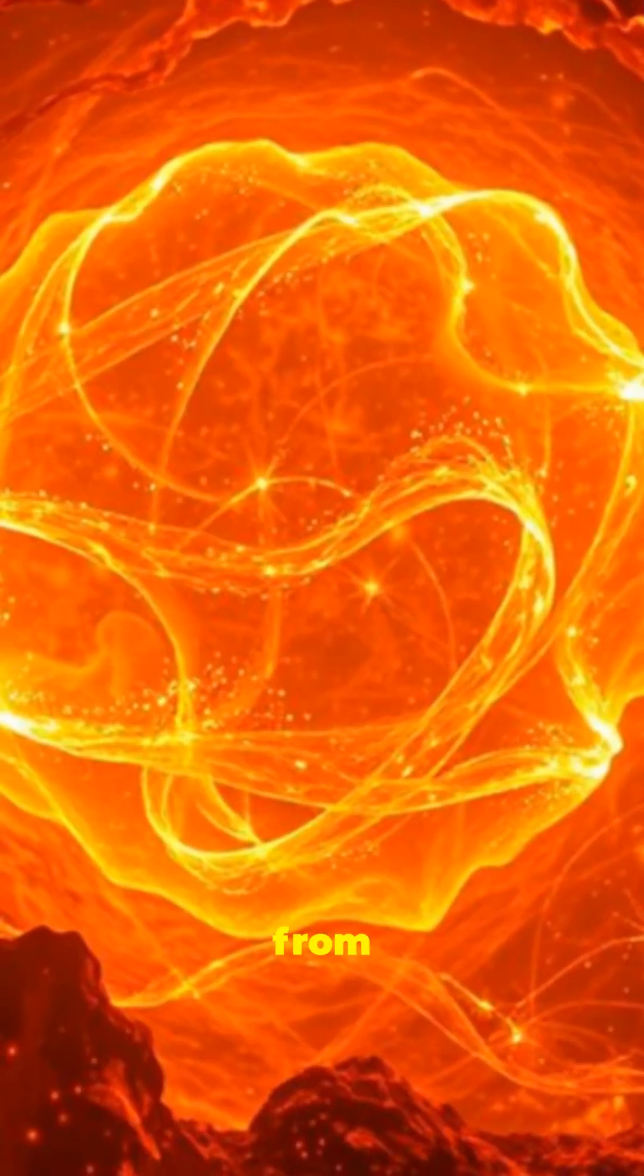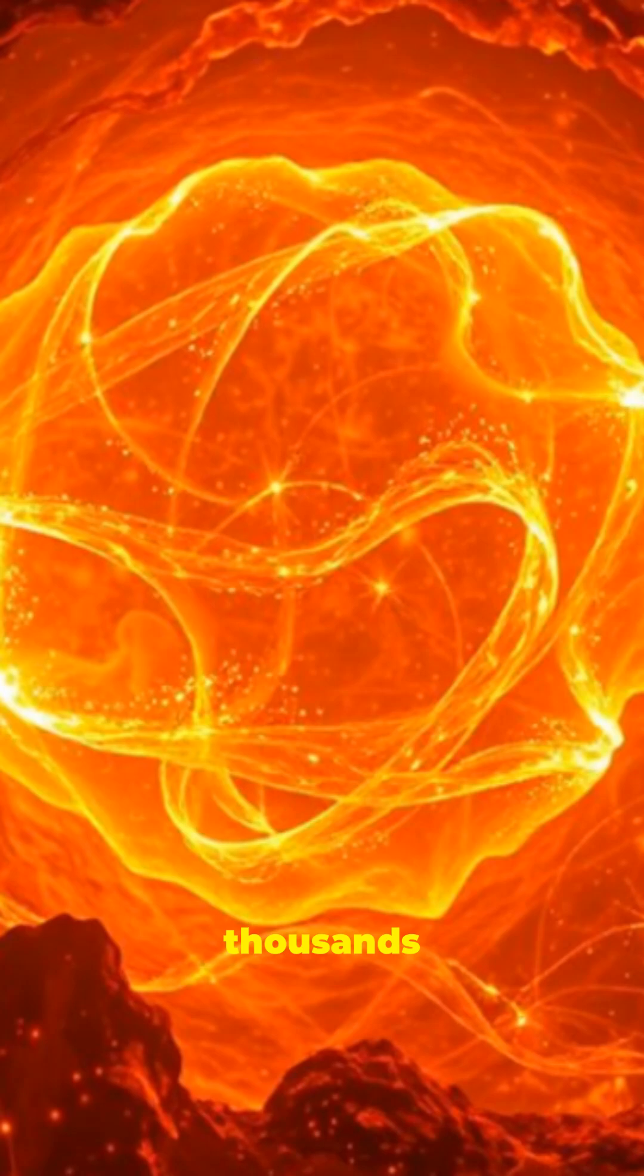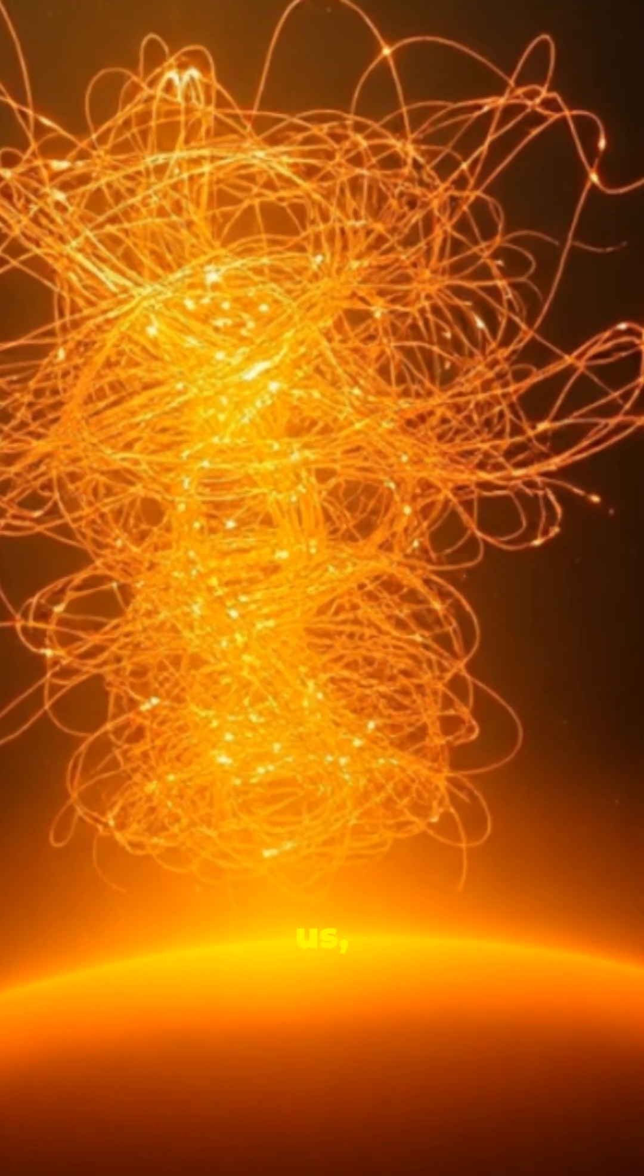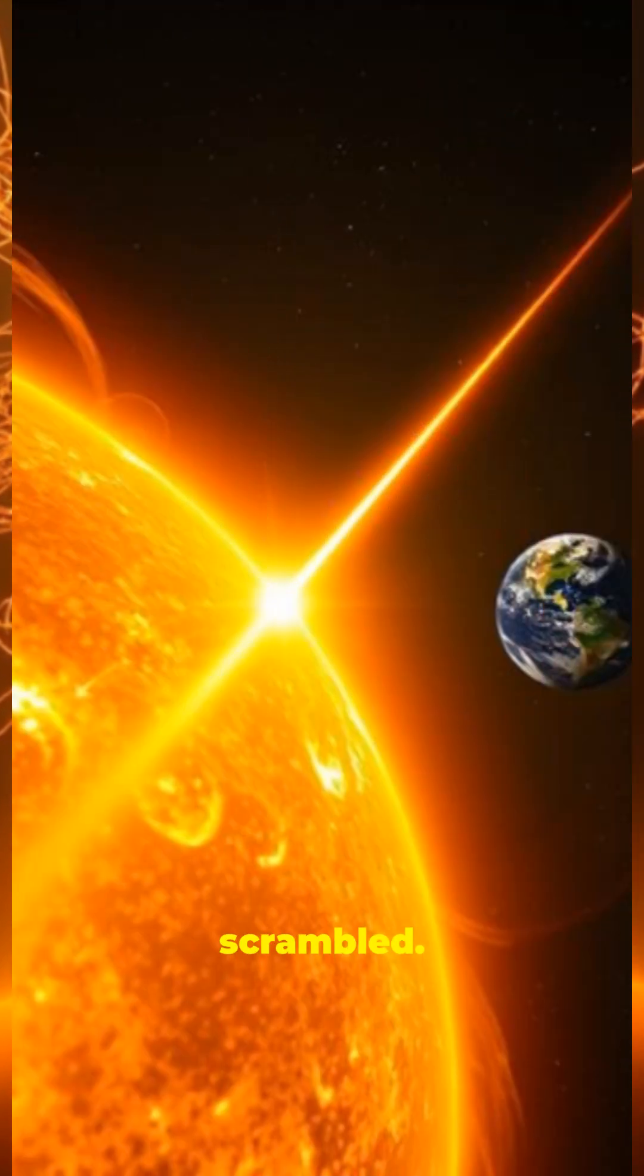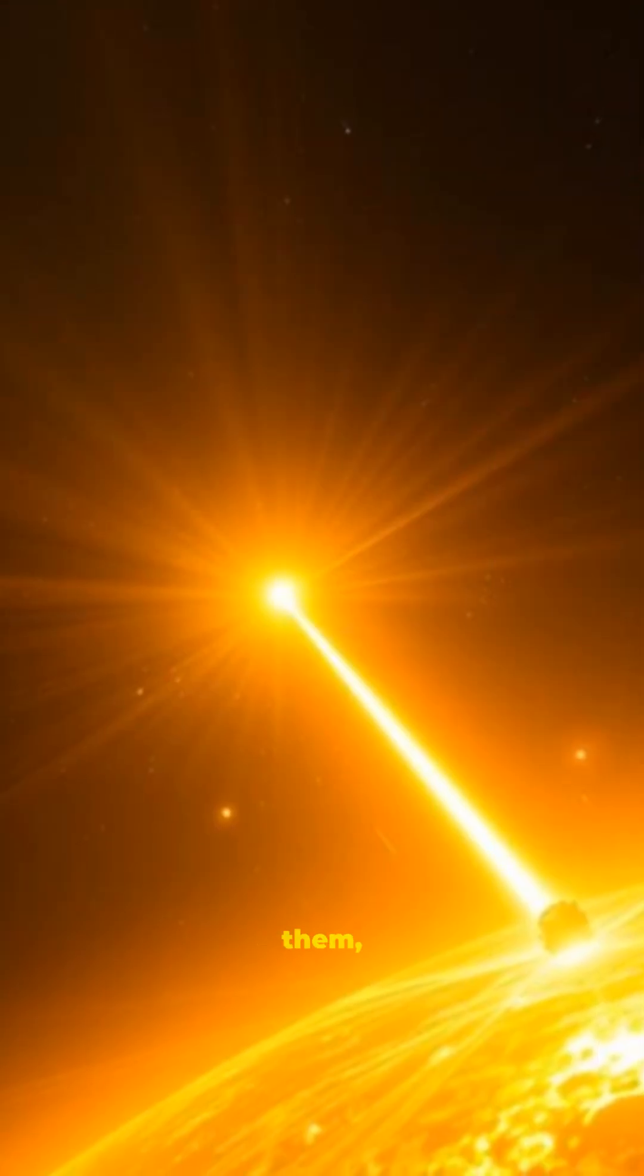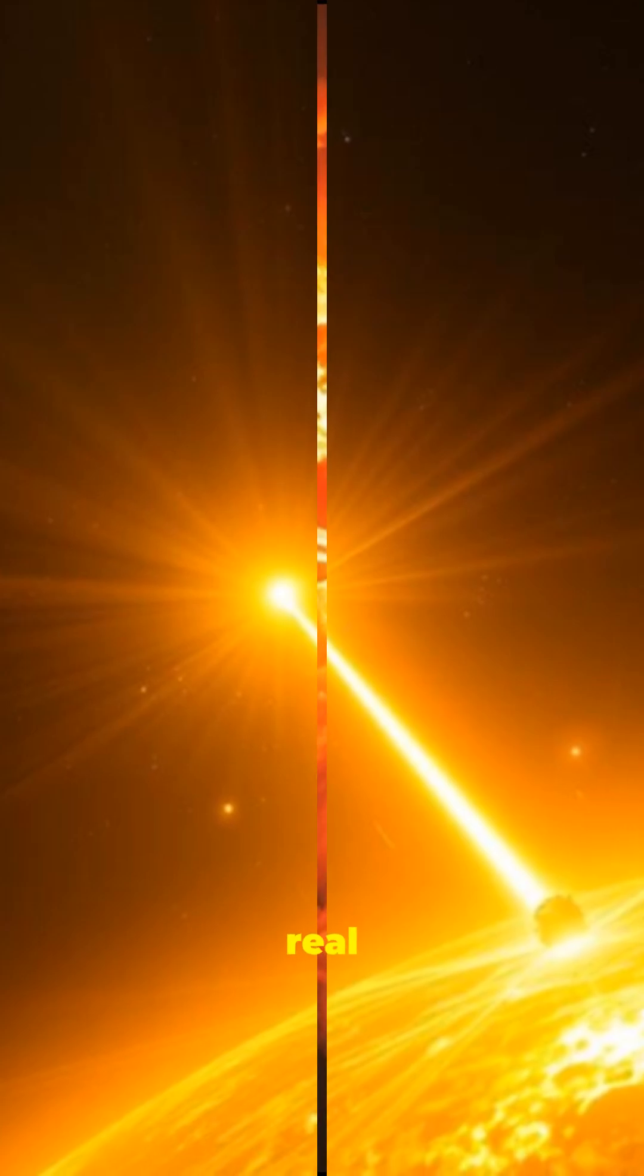Take the sun. Light from its core bounces around for thousands of years before it escapes. By the time sunlight reaches us, it's ancient and scrambled. Neutrinos, though, shoot straight out from the core and arrive in just eight minutes. When we detect them, we're seeing nuclear fusion in real time.